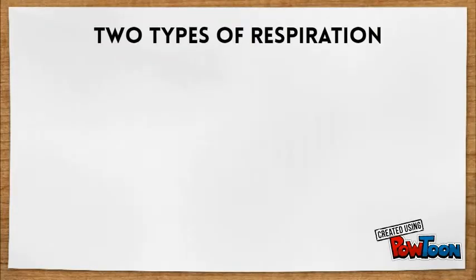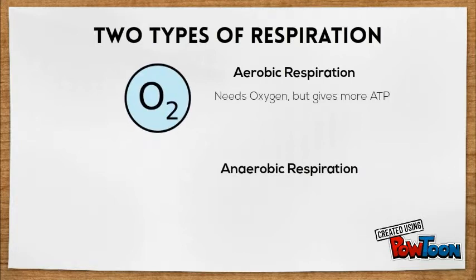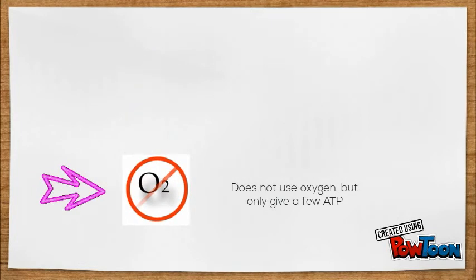There are two different types of respiration: aerobic respiration and anaerobic respiration. Aerobic respiration needs oxygen in order to occur. Anaerobic respiration does not use oxygen. Right now, we're going to concentrate on anaerobic respiration.